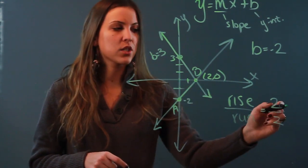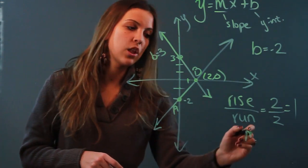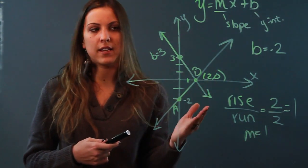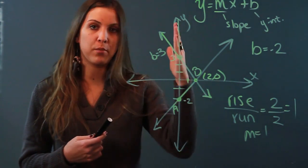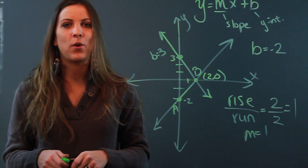That just reduces to 1, so that means for this line my slope is 1. Your slope tells you how steep your line is, and the bigger the slope, the steeper the line is. That is the definition of your slope and y-intercept.